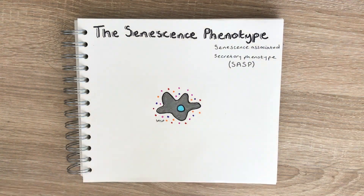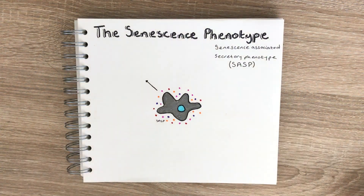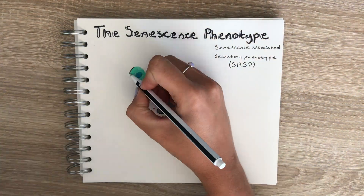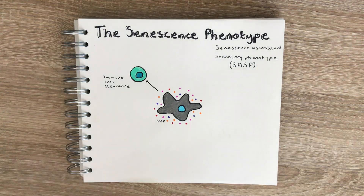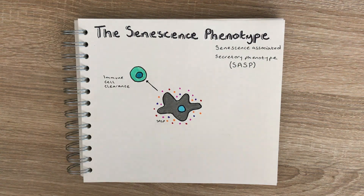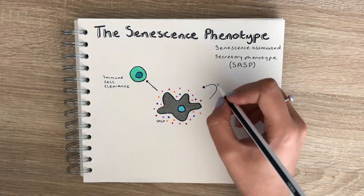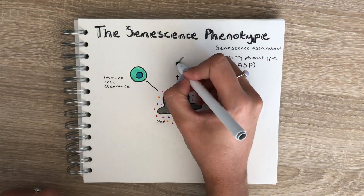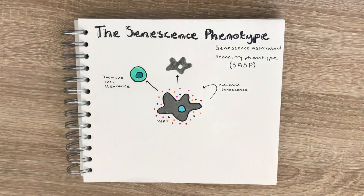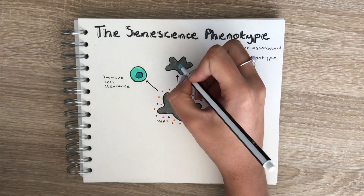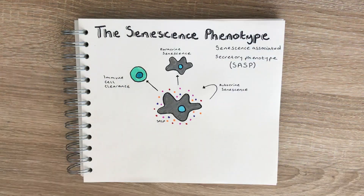One of the key features of the SASP is to attract immune cells, which should in turn orchestrate the clearance of senescent cells. However, SASP proteins are highly pleiotropic, meaning they have multiple functions and can impact a number of different biological processes. For example, the SASP is able to reinforce senescence in a cell autonomous manner as well as transmit senescence to neighbouring cells in a paracrine manner.